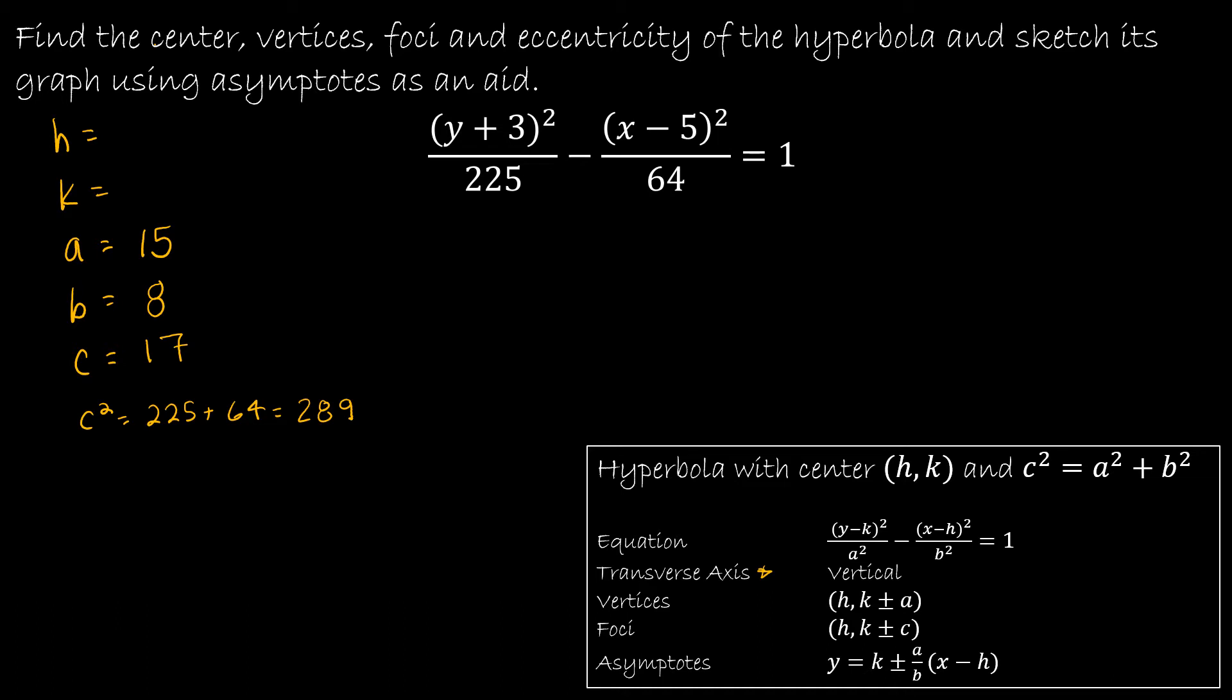And I can also find H and K without doing any work because H is the value that is always being subtracted from X, which is 5. And K is the value that's being subtracted from Y, which is a negative 3, because I would have had to subtract a negative 3 to get a positive 3. So really, I have found almost everything I need, except for, of course, the asymptote. So let's just go ahead and find everything here in my table.